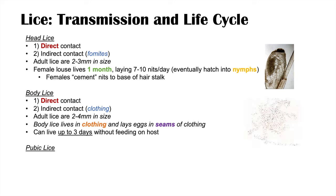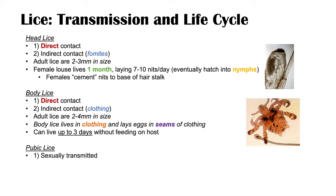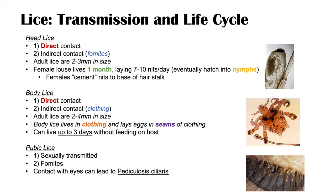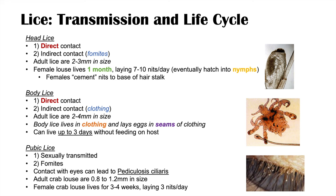Pubic lice are transmitted primarily through sexual activity and may also be transmitted via fomites, though this is less likely. Contact with eyes can lead to pediculosis ciliaris — infestation of the eyelashes. Adult crab lice are smaller than other types, about 0.8 to 1.2 millimeters in size. A female crab louse lives about three to four weeks, laying about three nits per day, cementing nits to the base of hair shafts like head lice.